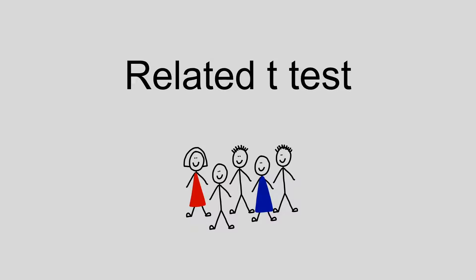The first assumption is that the independent variable should consist of two categorical related groups. So this means that the two groups are made up of the same participants who have been tested on two occasions. This is often pre and post intervention.